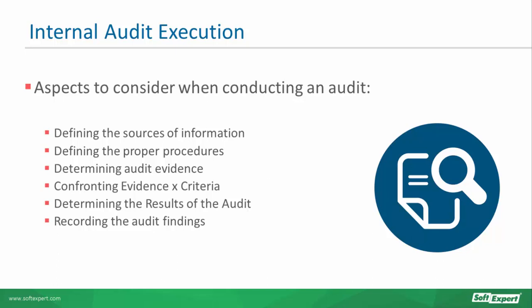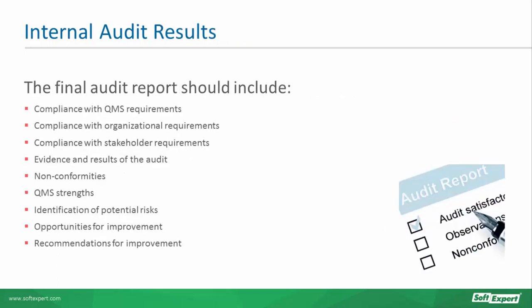Sources of information include: interviews with employees, evaluation of documents and policies, and analysis of performance indicators. What are the most appropriate procedures for each audit? Depending on the audit, procedures may vary and some aspects may require greater attention. Determine the audit evidence. Evaluate the identified evidence in relation to the audit criteria — that is, evaluate if the evidence meets the criteria. If it does not comply, it means that there are non-conformities. Determine the results of an audit. Document and record all audit findings.